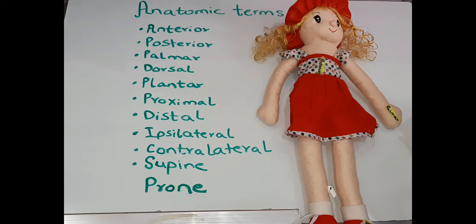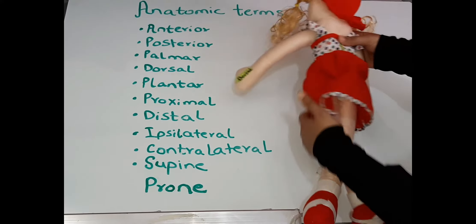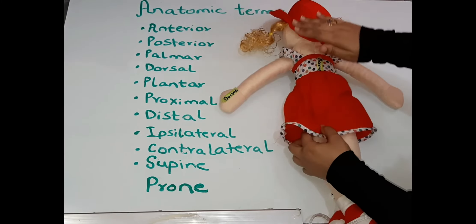anterior. The terms anterior and posterior refer to the front and the back of the body respectively. So this is the anterior surface of the body and this is the posterior surface of the body or the back of the body.